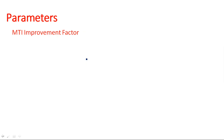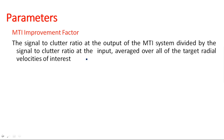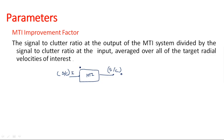The first parameter to consider is the MTI Improvement Factor (IF). The improvement factor is defined as the signal-to-clutter ratio at the output of the MTI system divided by the signal-to-clutter ratio at the input, averaged over all target radial velocities of interest. So: IF = (Signal-to-Clutter Ratio at output of MTI radar) / (Signal-to-Clutter Ratio at input of MTI radar).